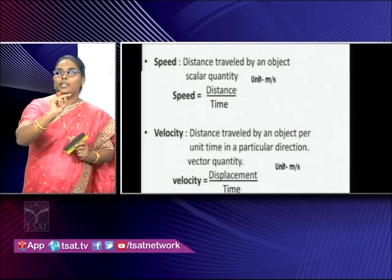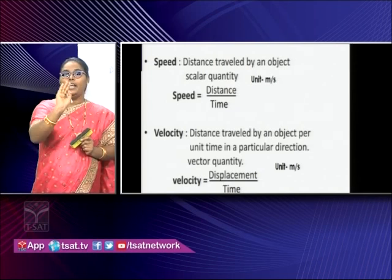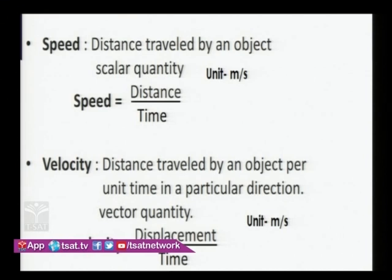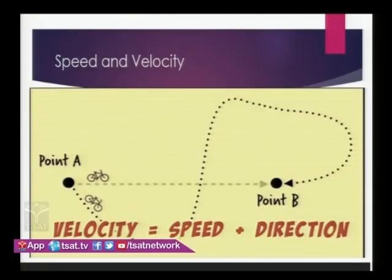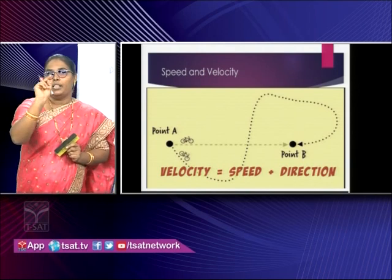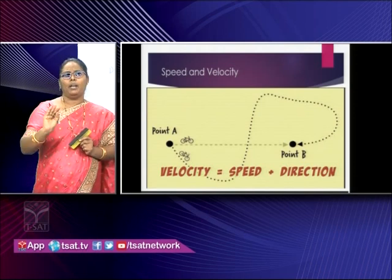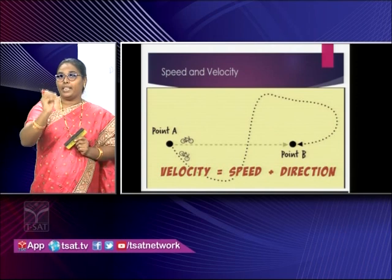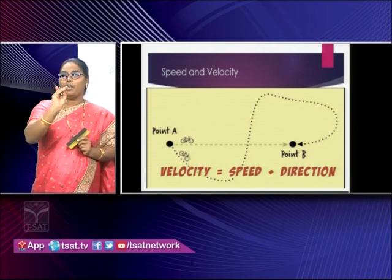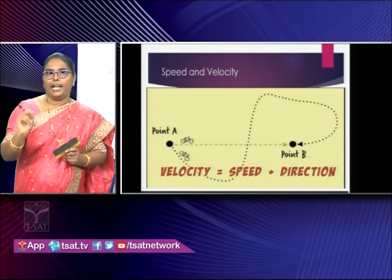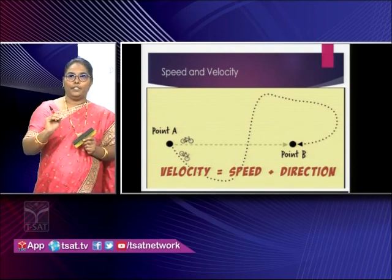When a body travels in a straight line in a particular direction, we say it possesses velocity. If it travels in a curved path, then we say that body has speed. Here, there are two points A and B, and a cyclist has to choose two ways — one curved path and one straight line path. Suppose the speed of this cycle is 1 kilometer per minute. To say that he has velocity, we must say he is moving with a speed of 1 kilometer per minute due east or due west — you need to specify the direction. So velocity is speed plus direction.